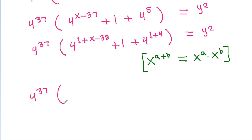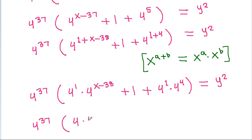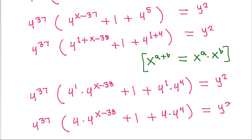So it is 4 power 37 times 4 power 1 times 4 power x minus 38 plus 1 plus 4 power 4, equal to y square. And it is 4 power 37 times 4 times 4 power x minus 38 plus 4 power 4, equal to y square.